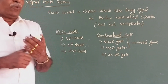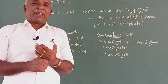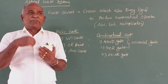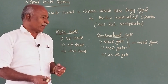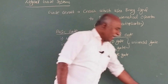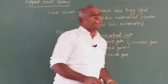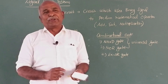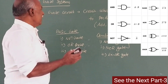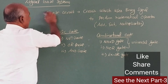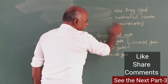Now, for each gate, we will look at what symbol is used, what the actual circuit is, what the input and output relations are. We will study one gate at a time. First, the first basic gate.